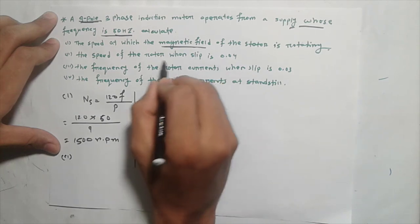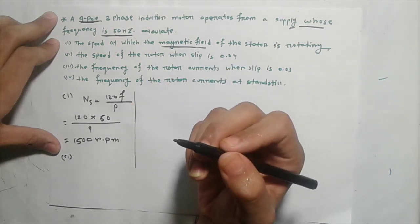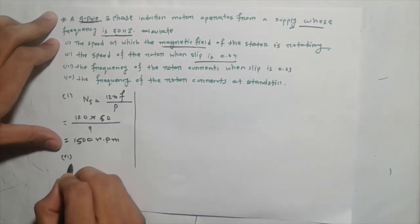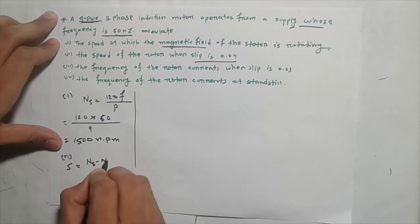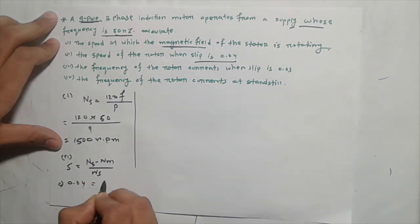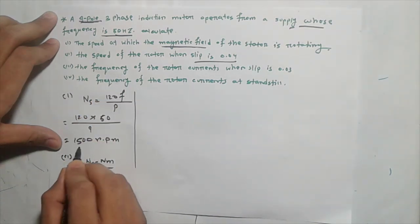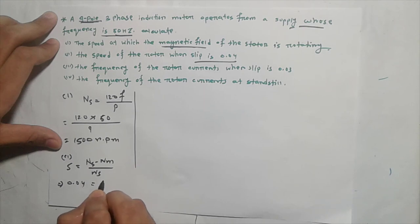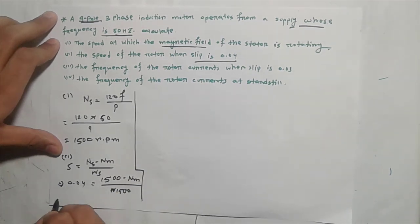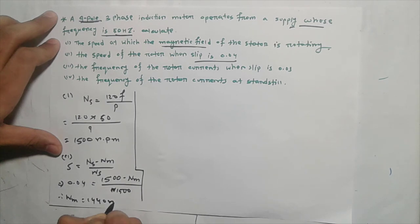Next, we find the mechanical speed of the rotor. The slip is given as 0.04. The rotor speed is calculated from the synchronous speed and slip, giving a result of 1440 RPM.